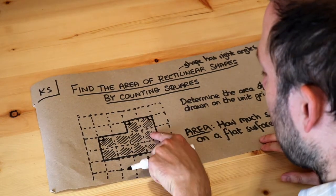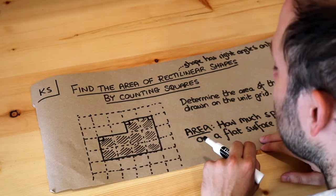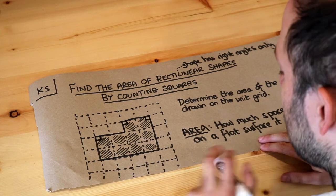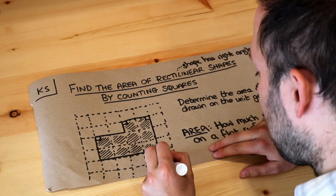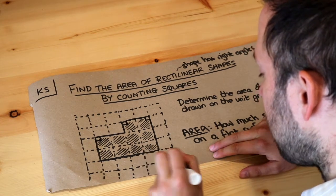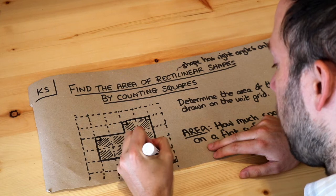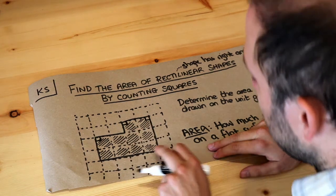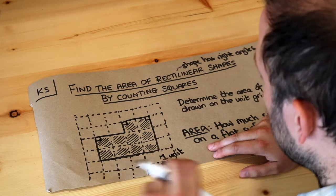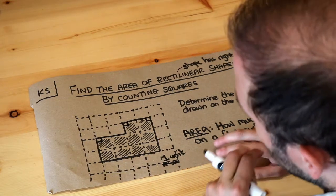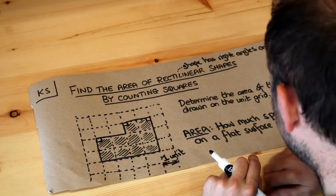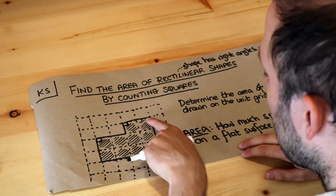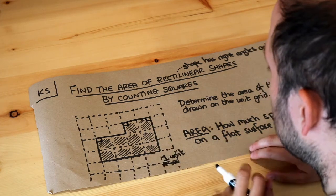One way we can work out how much space this takes up is to just count the squares. We're told that this is a unit grid — all that means is that each square represents one unit. We're not told what that unit is; it could be centimetres, it could be metres — it doesn't matter, so we're just going to say it's one unit. Let's get this measure of area by just counting the squares.